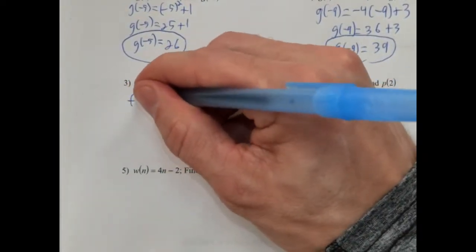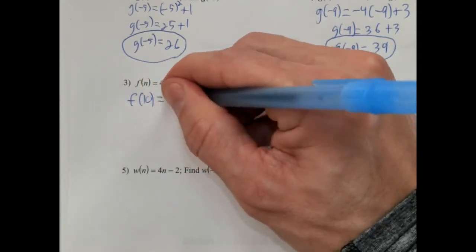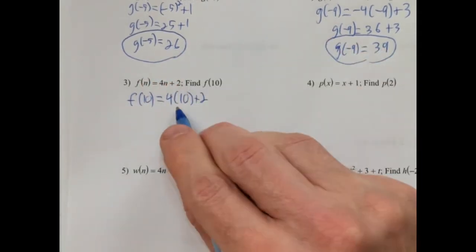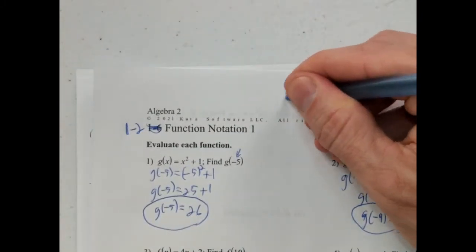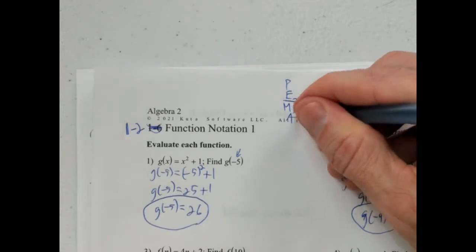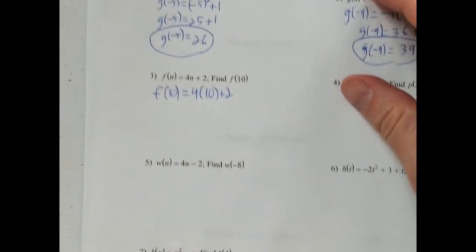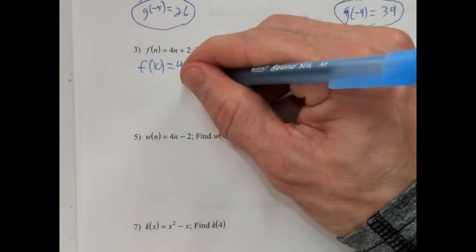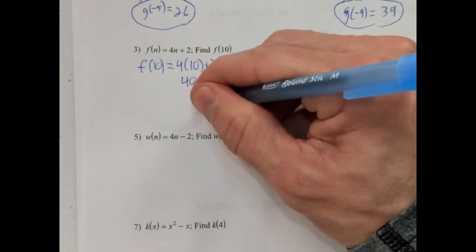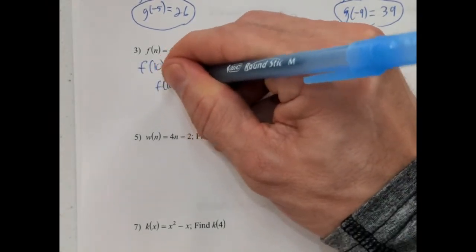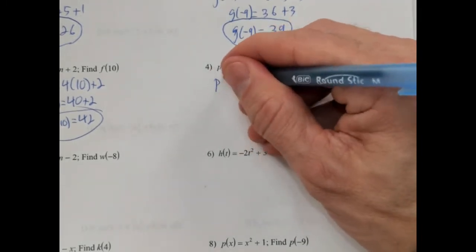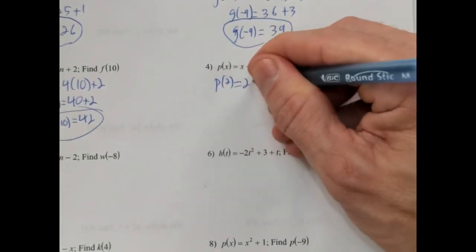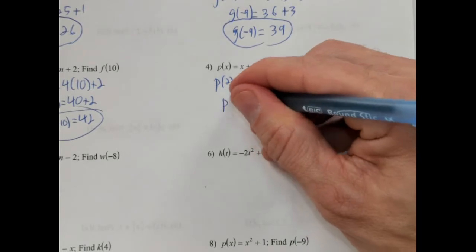f of 10: so f of 10 equals 4 times 10 plus 2. We multiply first — 4 times 10 is 40, plus 2 is 42. So f of 10 equals 42. And then p of 2: p of 2 equals 2 plus 1, so p of 2 equals 3.